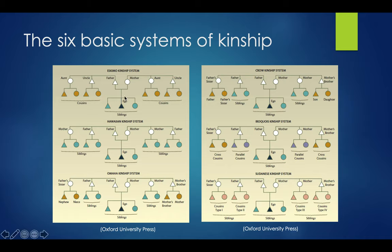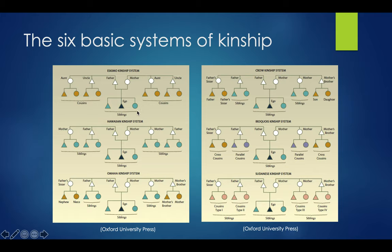Starting with the Eskimo kinship system: ego has siblings, which may be male or female, a mother and father, and on both the father's and mother's side there are aunts and uncles. The offspring of aunts and uncles, regardless of whether they're maternal or paternal, are called cousins. This is the system we're most familiar with — we don't have different terminology for male versus female siblings, and we equally weight relationships on our father's side and mother's side with the same terminology.